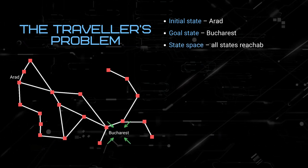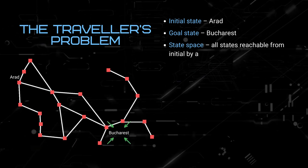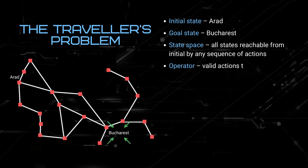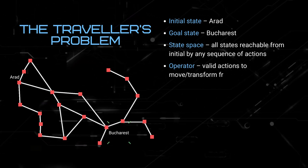The goal state is Bucharest, which is the city we want to reach. The state-space is all other cities in the map that can be reached in any sequence of actions.